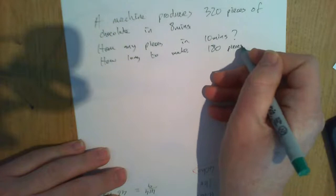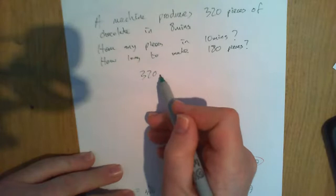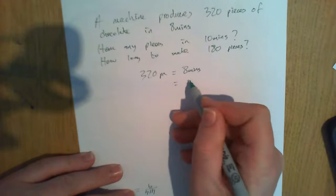All right, so let's do our maths. Okay, so 320 pieces in 8 minutes. So let's bring it down to one. One minute will produce 320 divided by 8, 40 pieces.